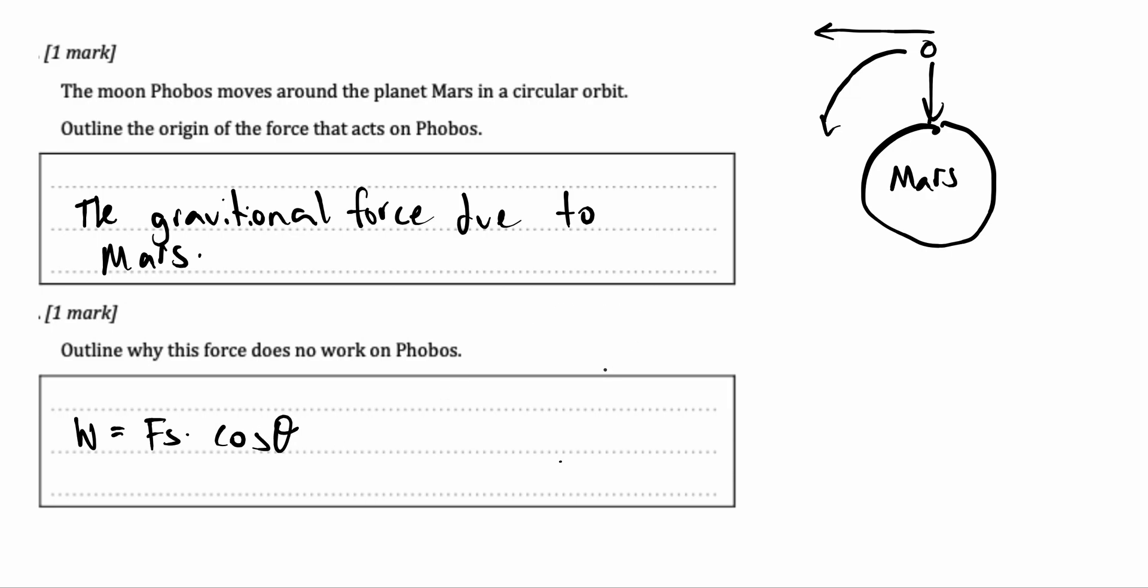Well, the force due to Mars, the gravitational force always acts perpendicular to the moon, always acts 90 degrees to the moon. If we can see it acts straight, 90 degrees. And for this reason, cos theta is actually cos 90. And by using a unit circle or the calculator, we know cos 90 is actually equal to zero.